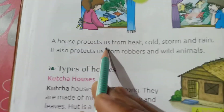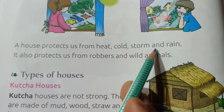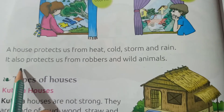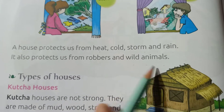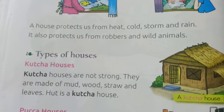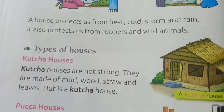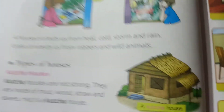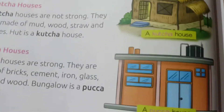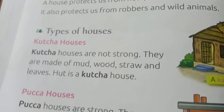A house protects us from heat, cold, storm and rain. It also protects us from robbers and wild animals. We need a house to live in. A house where we live in is our home. Our home protects us from many things and dangers. We are safe in our home.